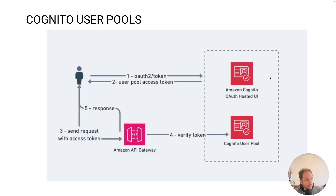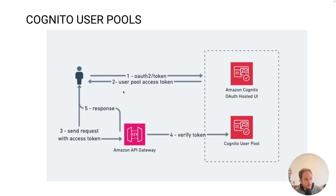Next is Cognito User Pools. Cognito is the authorization service from Amazon. It works very similarly to the IAM example, but the user uses a sign-in or sign-up form from Cognito — you can choose between the hosted UI or your own custom form. If sign-in is successful, the user gets an access token, which needs to be sent through a header you define on the console — usually the authorization header. The API Gateway verifies the token using the Cognito User Pool service you configure, and if successful you get the response. I have a dedicated video on this, linked in the description.